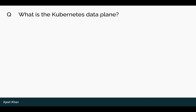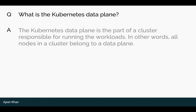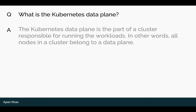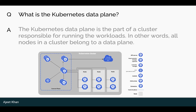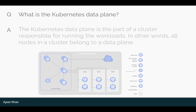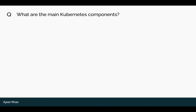What is the Kubernetes data plane? The Kubernetes data plane is the part of a cluster responsible for running the workloads. In other words, all nodes in a cluster belong to the data plane, as shown in the diagram.